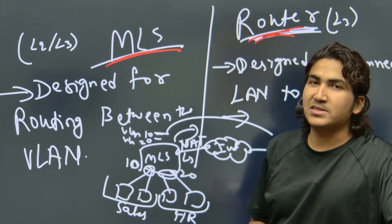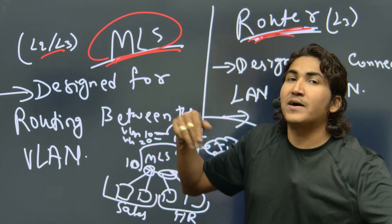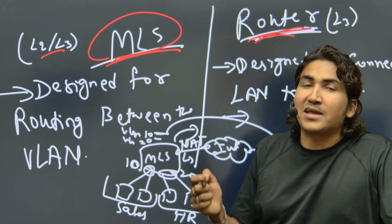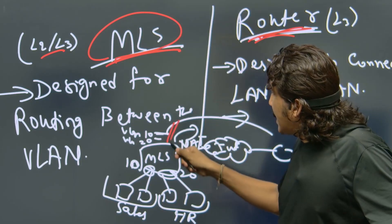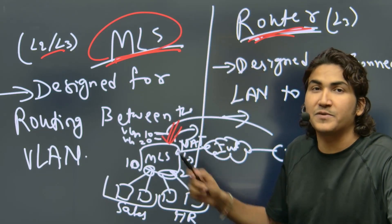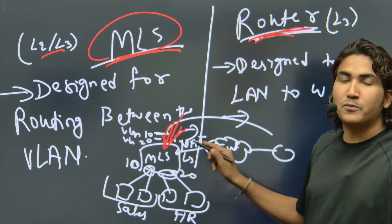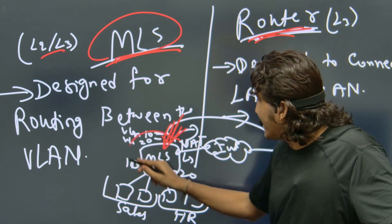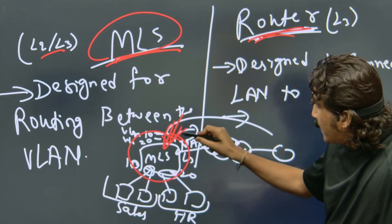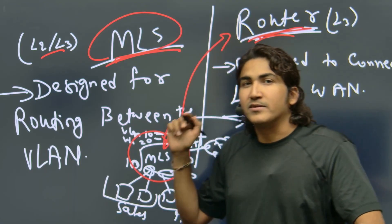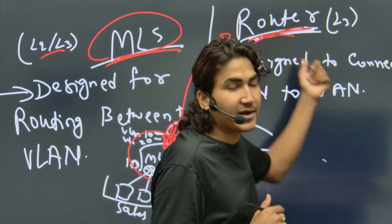MLS works at both layer 2 and layer 3. Router works at layer 3 only. Router is designed for advanced routing; MLS or L3 switch is designed for basic routing, such as inter-VLAN routing. Even if MLS supports NAT or VPN, it will not give the best performance — there will be speed issues. Router is designed to perform NATing and translation, giving better performance.